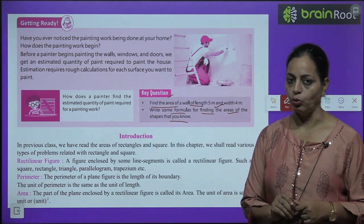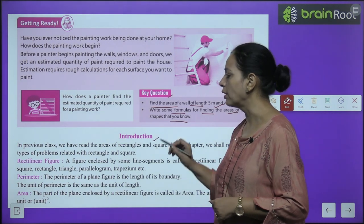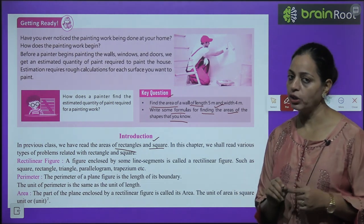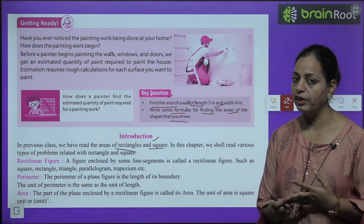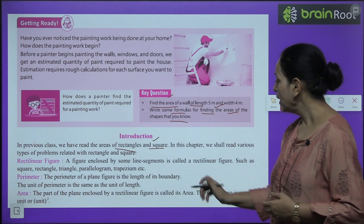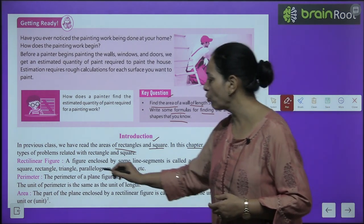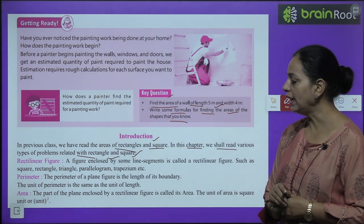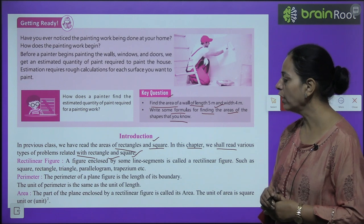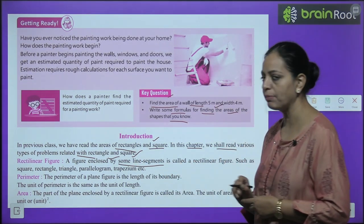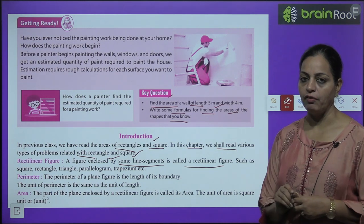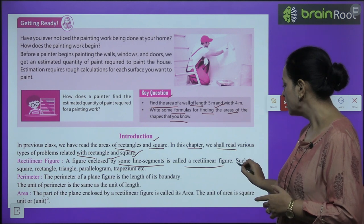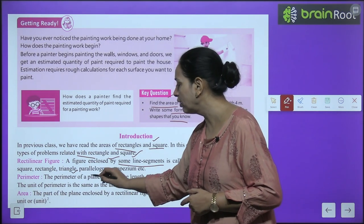In the previous class we read about the areas of rectangles and squares. In this chapter we shall read various types of problems related to rectangles and squares. First, rectilinear figures: a figure enclosed by some line segments is called a rectilinear figure. Such figures include square, rectangle, triangle, parallelogram, trapezium, etc.